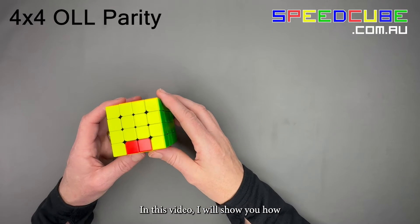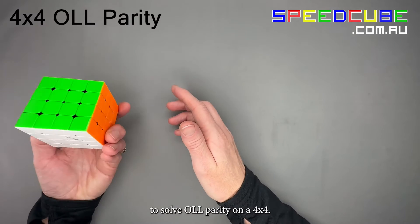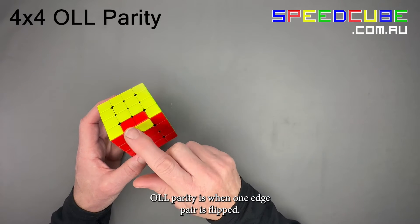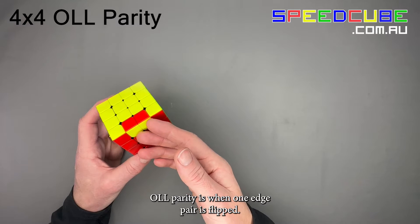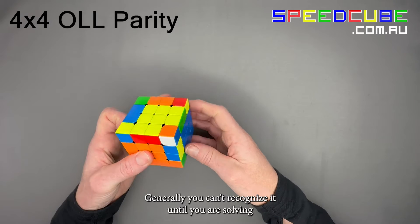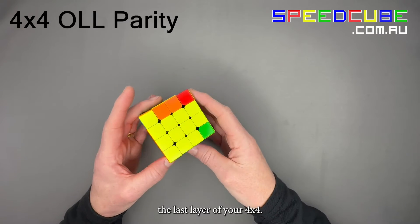In this video I will show you how to solve OLL parity on a 4x4. OLL parity is when one edge pair is flipped. Generally you can't recognize it until you are solving the last layer of your 4x4.